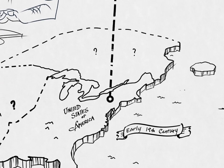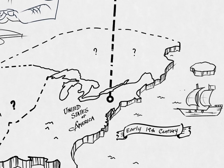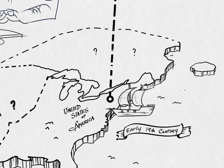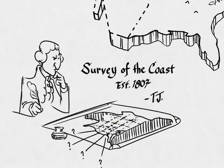In the early 19th century, President Thomas Jefferson led a country that was largely unmapped and unexplored. By 1807, he created the Survey of the Coast to chart the seafloor and coastline. This was our beginning.